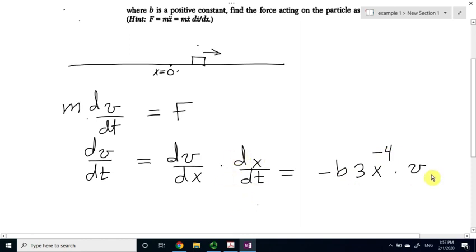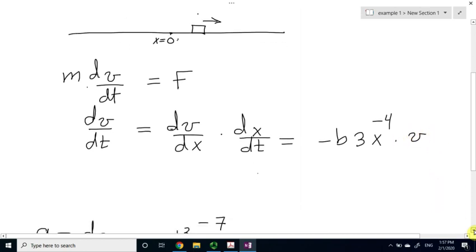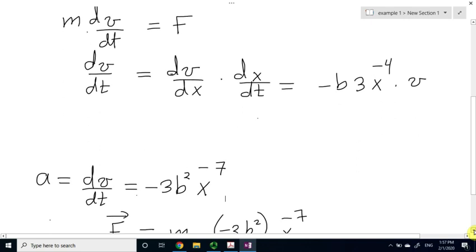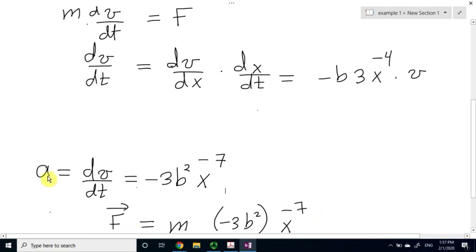and dx by dt is just the velocity. But we already know the velocity as a function of x, so we substitute the velocity as a function of x, and we reach the following result. The acceleration dv by dt equals negative 3b squared x to the minus 7.